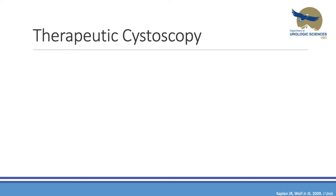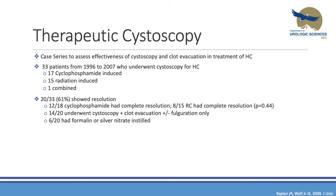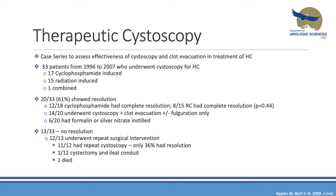From a therapeutic perspective, Kaplan and Wolf Jr. looked at 33 patients who underwent cystoscopy over a decade — 17 cyclophosphamide-induced, 15 radiation. They found complete resolution after cystoscopy, clot evacuation, and fulguration in 14 patients. 20 patients showed resolution, but 14 was purely from cystoscopy and clot evacuation alone; only six had formalin and silver nitrate also instilled. 13 showed no resolution, and of those, 11 had a repeat cystoscopy with only 36% achieving resolution. This suggests going early to cystoscopy may tell us quickly whether it will be effective or if more aggressive treatment is needed.